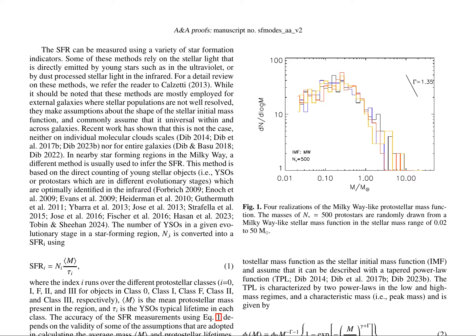However, these methods assume a universal stellar initial mass function (IMF), which recent work has shown is not the case. In nearby star-forming regions, SFRs are often inferred by directly counting young stellar objects (YSOs) or protostars in different evolutionary stages, identified in the infrared. The number of YSOs in a given stage is converted into a SFR using equation 1, which depends on assumptions about average mass and protostellar lifetimes.